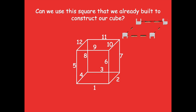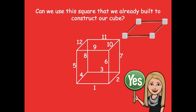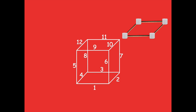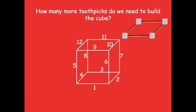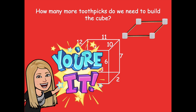Can we use this square that we already built to construct our cube? Yes — we can say that's the bottom of our cube. So how many more toothpicks do we need to build this cube? There are twelve edges total, and in our square we already have four edges. Pause the video, think about it — twelve minus four — and then click play when you're ready to go over it together.